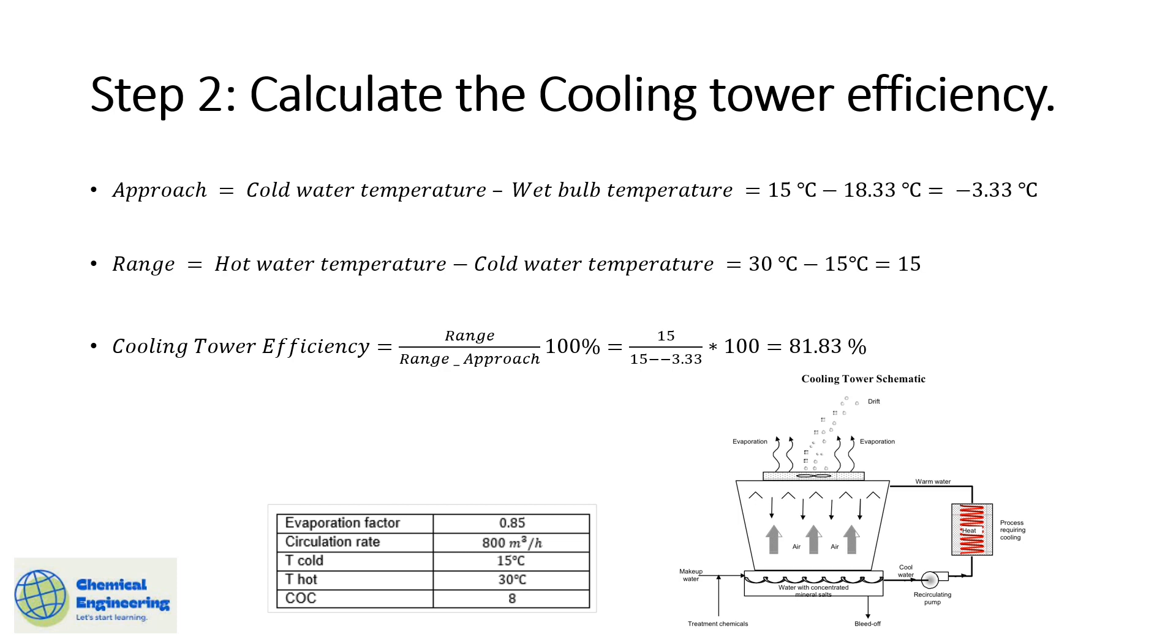Next step will be to get the efficiency. Now to get the efficiency, first let's get the approach which is the difference between the cold water temperature and the wet bulb temperature. Let's estimate a cold temperature of 15 degrees and a hot temperature of 30 degrees. What do we mean by that? The hot temperature is basically the temperature that's coming from our system to be cooled in the cooling tower, and once our cooling tower has done its work we will get a lower temperature. Hence our water has been cooled off to 15 degrees celsius.